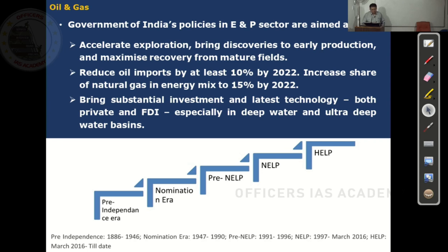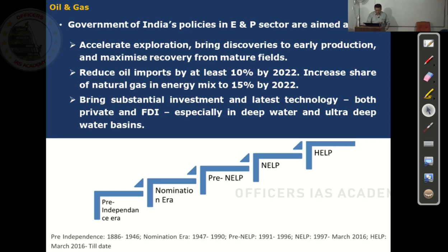Looking at the historical evolution of oil policy: the pre-independence era ran from 1886 to 1946, the nomination era from 1947 to 1990, pre-NELP from 1991 to 1996, NELP from 1997 to March 2016, and HELP from March 2016 till date. The really important ones to remember are NELP and HELP.